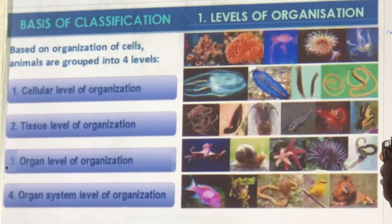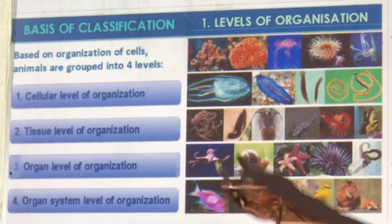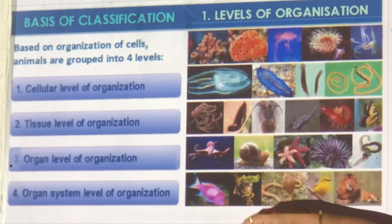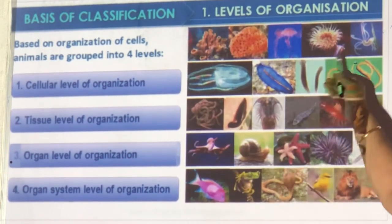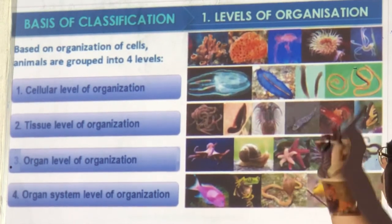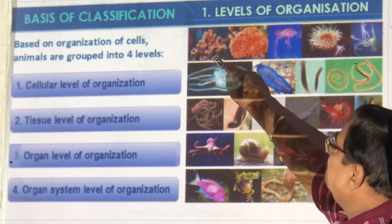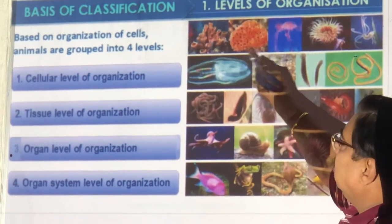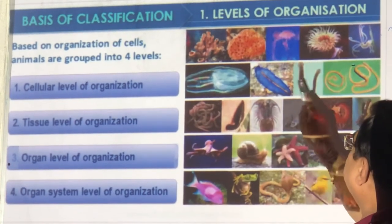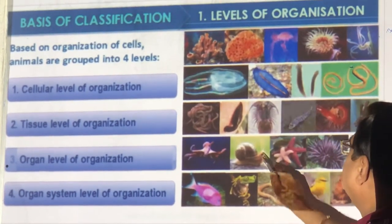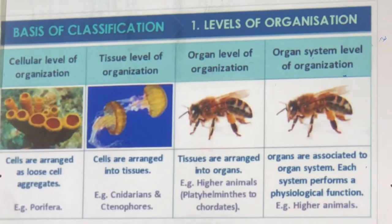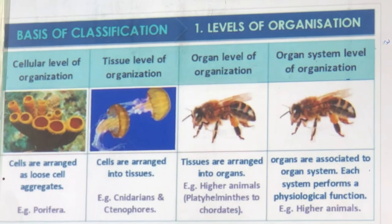The first criterion is level of organization. Some are only cellular, like sponges. Some are at the tissue level, as we see in Hydra. Some have organs as seen in higher ones, and others have organ systems. So you can see all types of animals from cellular to organ system level.